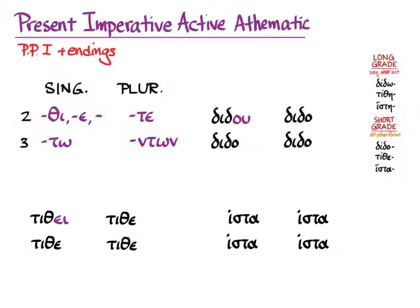With τίθημι, we do the same thing. We treat the short stem of τίθημι as an epsilon contract and combine it with the second person singular imperative ending that you already know, contract it, and we get τίθει. And then with ἵστημι, instead of putting an ending on it, we simply use the long-grade stem. So the first two, δίδωμι and τίθημι, actually use your thematic ending and do a contract verb sort of thing, and for ἵστημι, you have to know not to use the short stem but simply the long-grade stem without an ending.